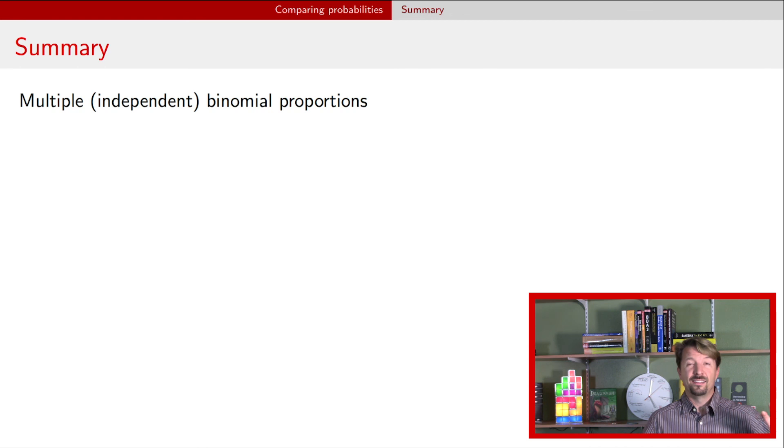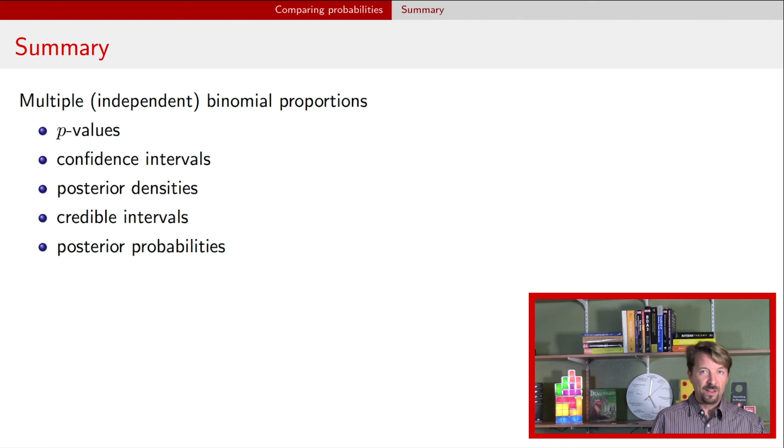Okay, so as a summary of what we did between this video and the previous video, we basically showed a situation where we have multiple independent binomial models with possibly different probabilities or proportions. And we just showed how at least we can use our code to look at p-values or relevant hypotheses, confidence intervals, posterior probabilities, credible intervals, posterior densities, and so forth.